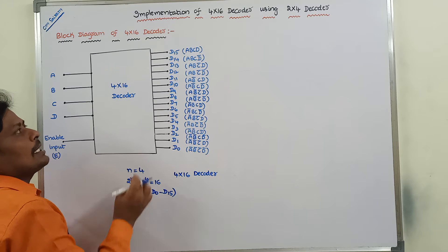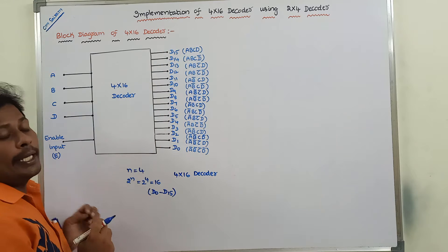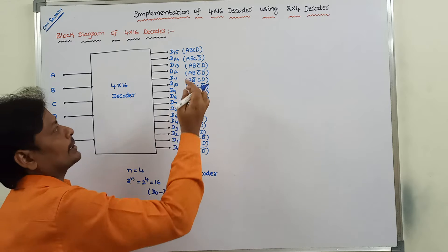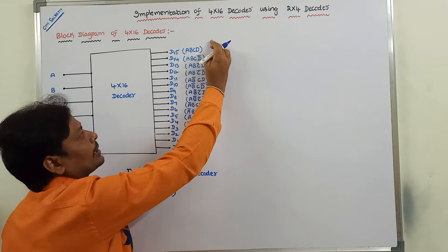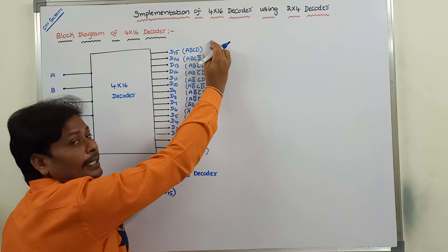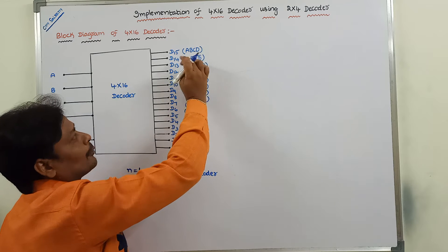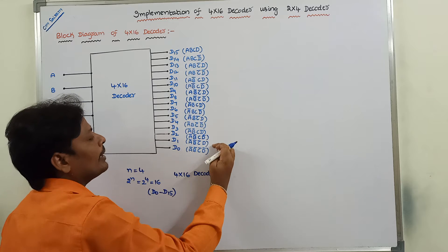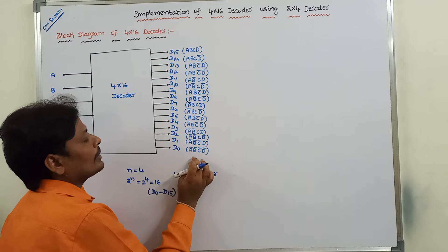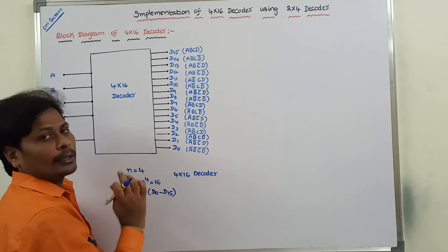Each and every output is one product term. For example, D15 has the product term A·B·C·D, and D14 is A·B·C·D̄. Similarly, D0 is Ā·B̄·C̄·D̄. So each and every product term is called a minterm.